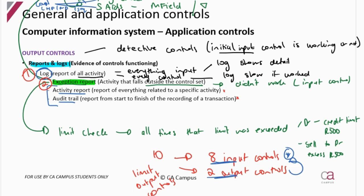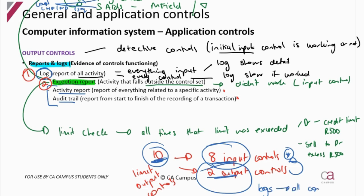Look at what's required — when discussing output controls, consider which assertion they're dealing with. If they're asking you to audit the occurrence assertion or accuracy assertion, go through your program checks and screen aids and discuss the output accordingly. If there are 10 marks and you have eight input controls, don't list eight output controls — that's 16 points when you only need 10 or 11. I would group logs of all controls together and then exception reports where all the input controls didn't work.